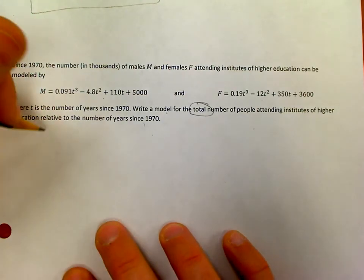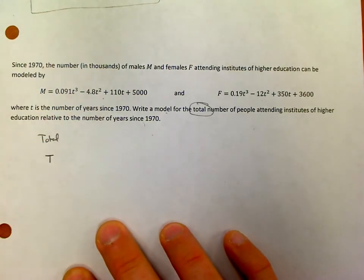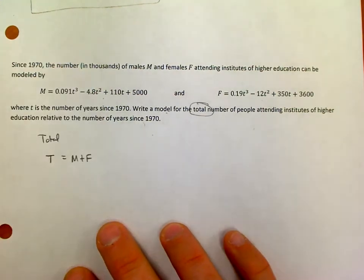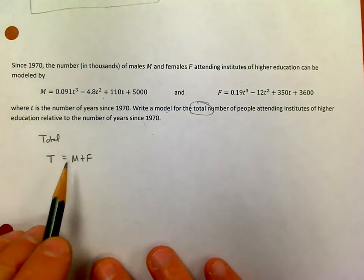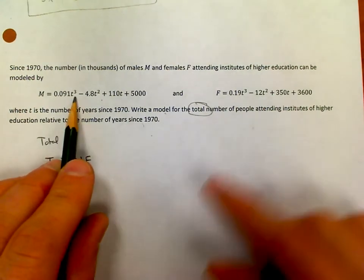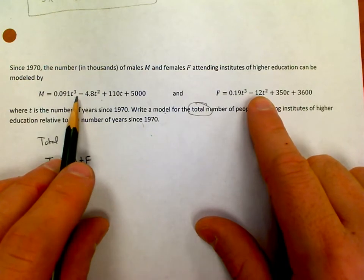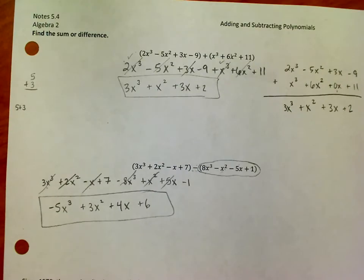It's easy to overthink this problem. Really, all they're saying is if I'm looking for the total, maybe I'll call that T, that would just be the addition of the males and the females all together, right? Which is a fancy way of saying I want to take this polynomial and add it to this polynomial. The males and the females give me the total.